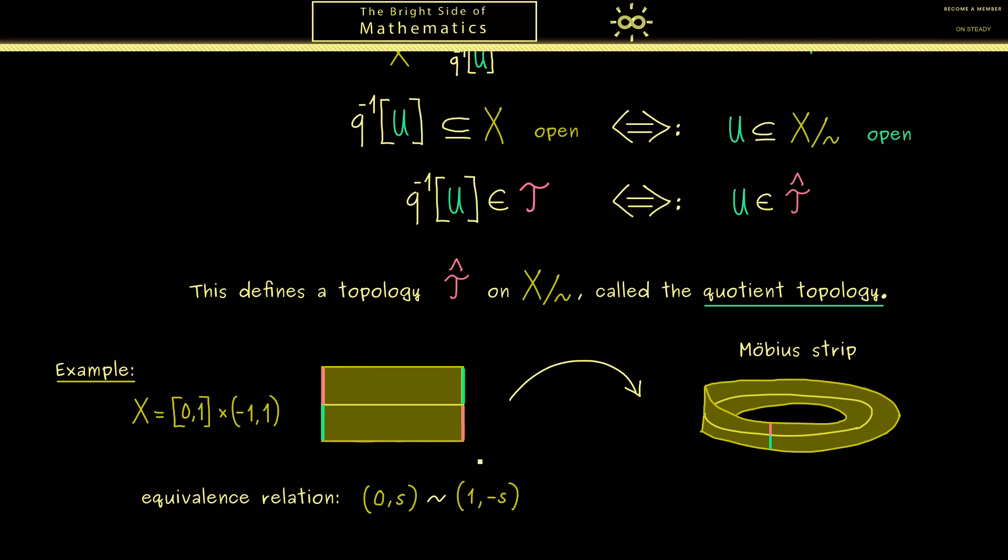Then the next thing we can talk about concerns open sets on the Möbius strip. For example I can ask you is this set here open. To answer this you have to look at the pre-image under the map q. This means here in the pre-image we find one part here and the other part here. Therefore this set here is open if the two parts here are open in the original topology. And of course here in X we take the standard topology which is defined with the Euclidean metric.